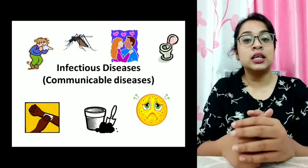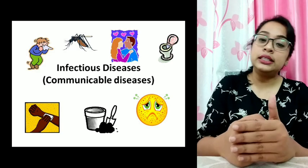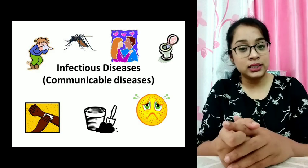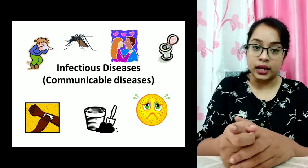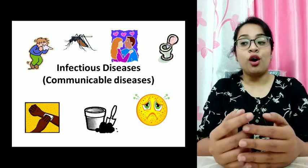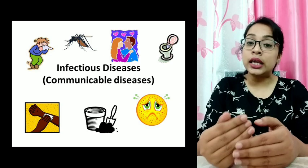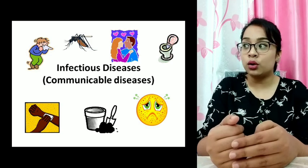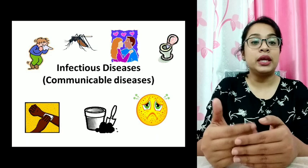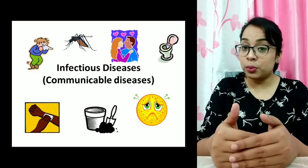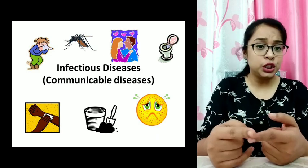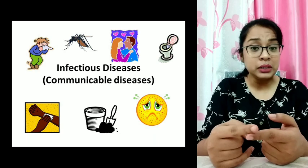Diseases can be spread in different ways. The first is through direct contact — if you touch an infected person or touch their things such as their clothes or utensils, you may get the disease. Diseases like tuberculosis, chickenpox, and measles can spread this way.